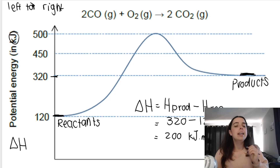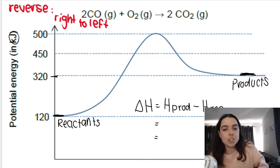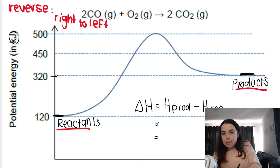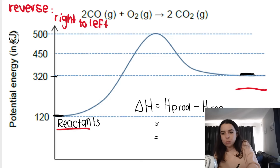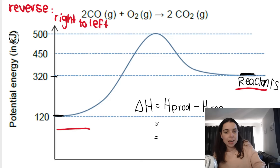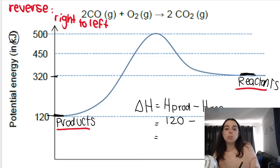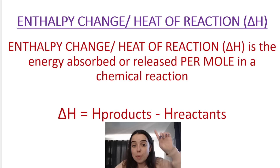For the reverse reaction, we reverse the direction — we read from right to left. That means the products and reactants switch places. Delta H equals enthalpy of the products (now 120) minus enthalpy of the reactants (now 320), giving us negative 200 kJ/mol. This is how we calculate change in enthalpy when using a graph.